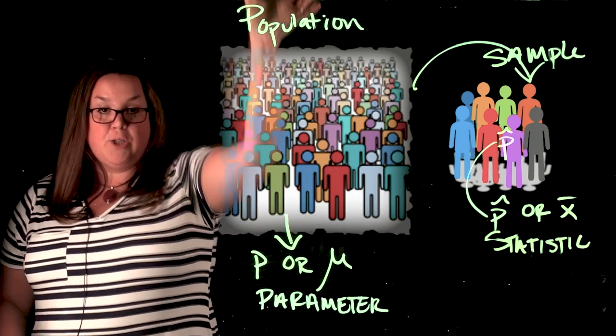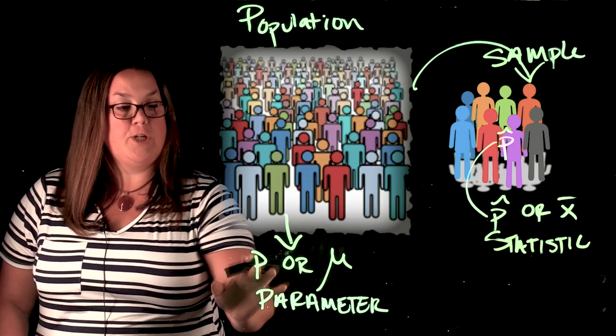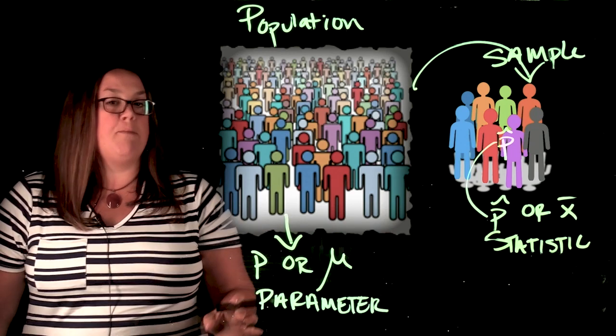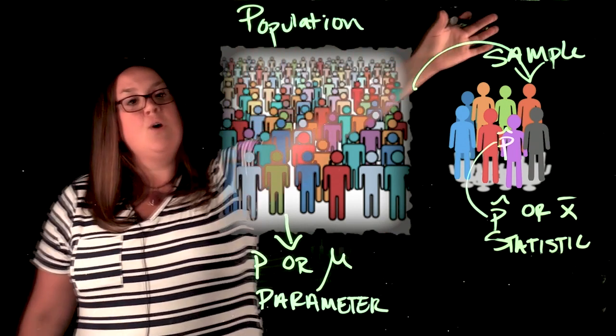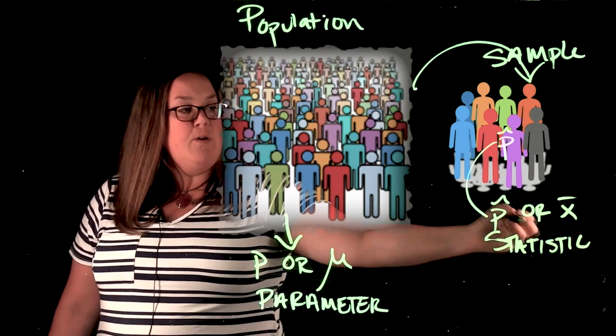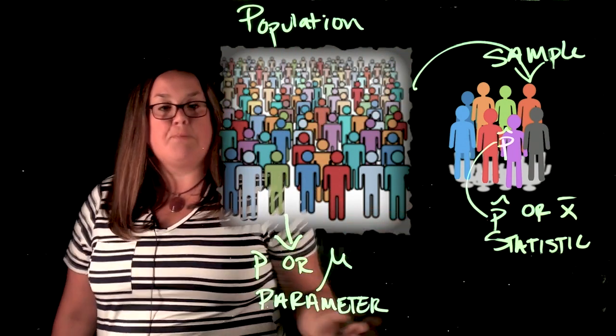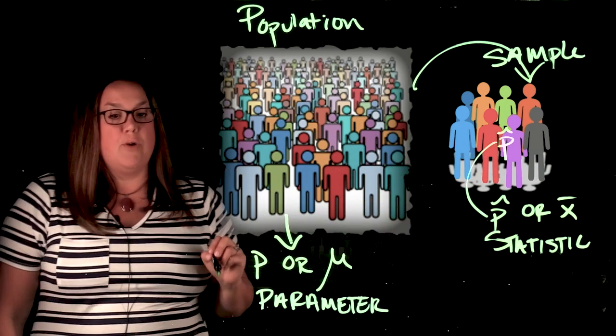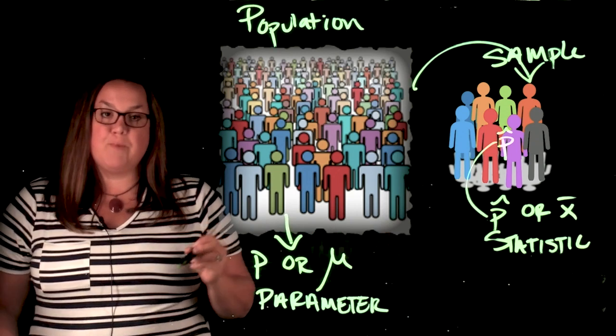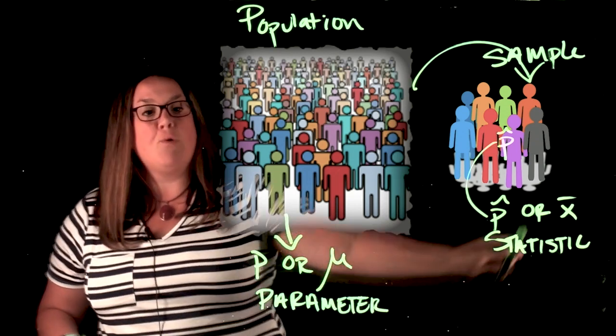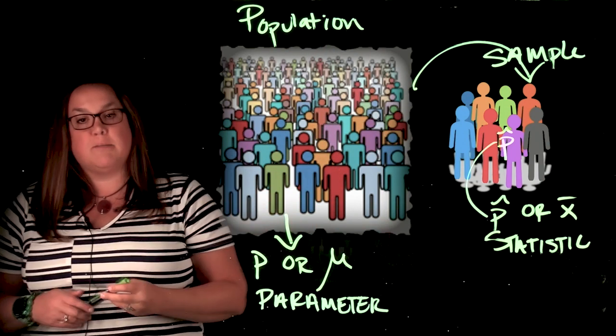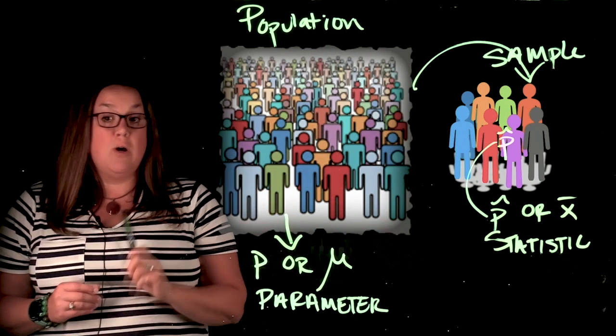So population, we don't usually know. The notation for population measurements are p and mu. Those are parameters because they're referring to the population. Or we can have a sample, and those measurements would be p hat or x bar. Helps us to know they're from a sample. Because they're measurements referring to the sample, those are going to be called statistics. And in future videos, we'll talk about how we know the habits of these so that we can actually estimate these parameters that we ultimately won't know. See you then.